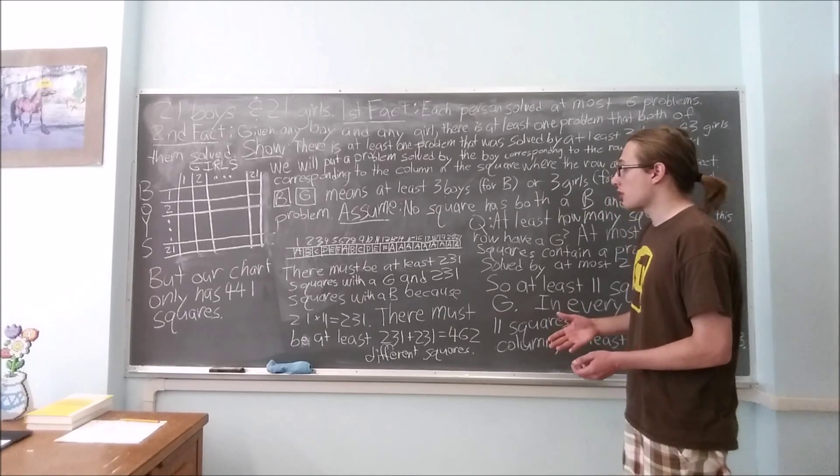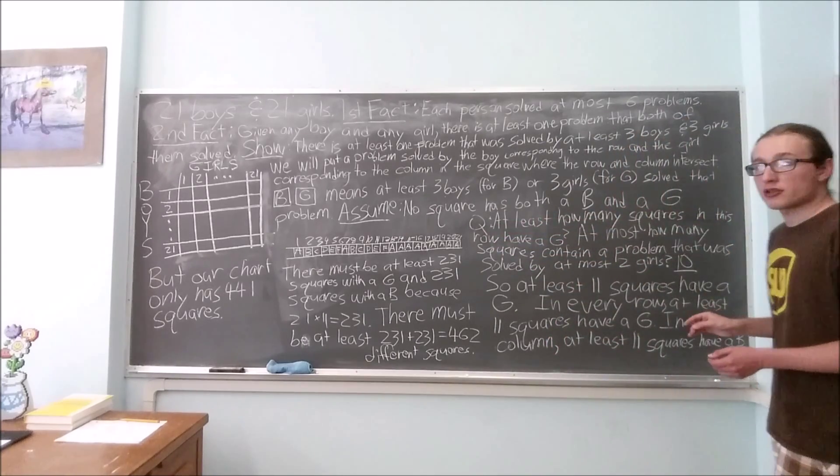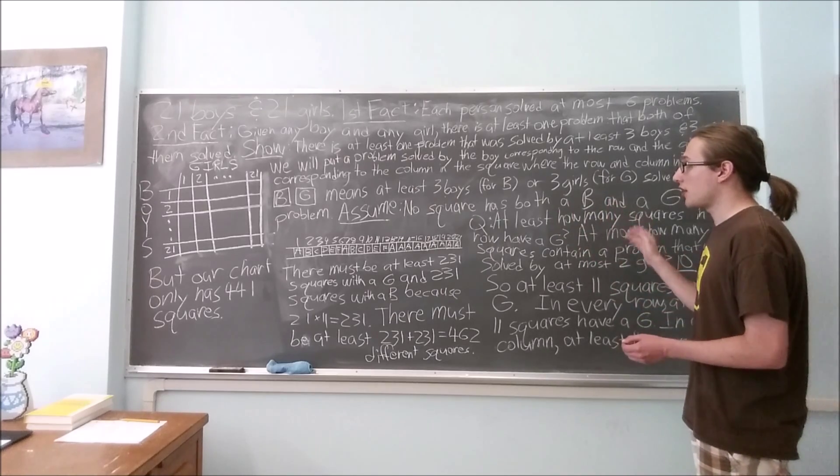Because we've reached a contradiction, we conclude that our assumption was false. Thus, there is a square that has both a B and a G.